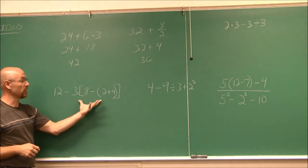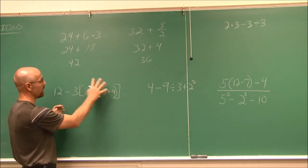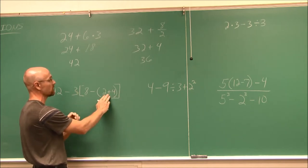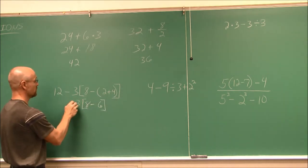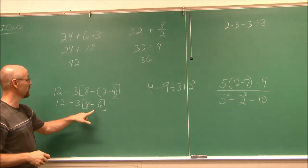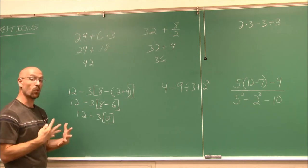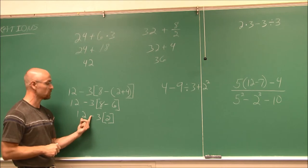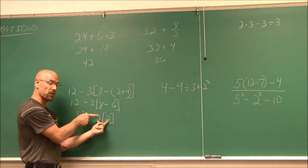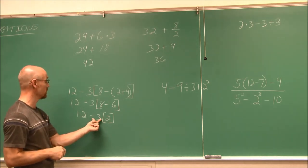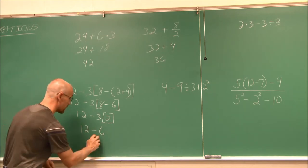Here we have grouping symbols — brackets and parentheses. Always work to the innermost grouping symbol first. Looking at the whole expression, the inner parentheses are inside the brackets, so that's where I start. 2 plus 4 is 6. I've eliminated those. I still have the brackets: 8 minus 6 is 2. Now I have multiplication and subtraction. Multiplication comes first: 3 times 2 is 6. This is a negative 6, so we have 12 minus 6. That subtraction gives us 6.